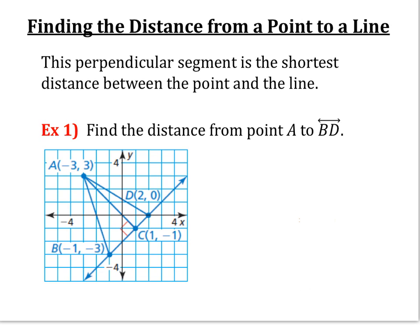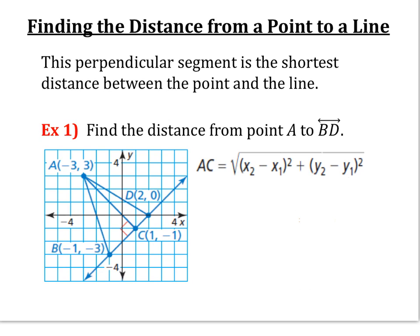Let's take a look at this example, knowing that the perpendicular segment is the shortest distance between a point and a line. Example one: find the distance from point A to line BD. Here's point A and here's line BD. We're looking for the actual shortest distance, so we need to figure out the length from A to C, because that's where we have a perpendicular segment intersecting line BD. First we identify our distance formula: from A to C, we get the square root of (x₂ − x₁)² + (y₂ − y₁)².